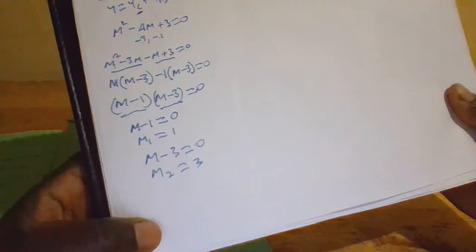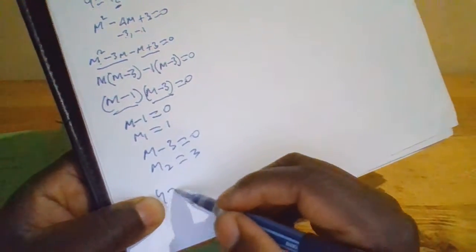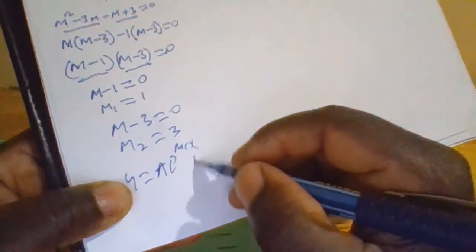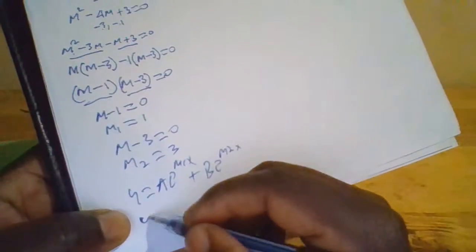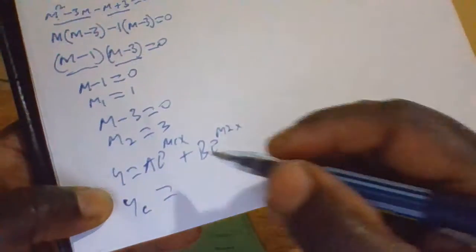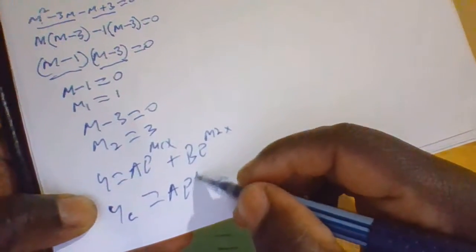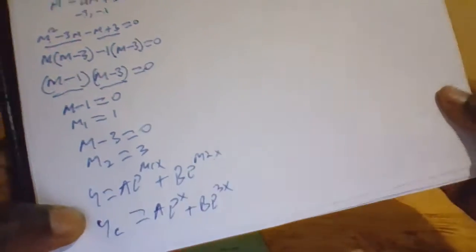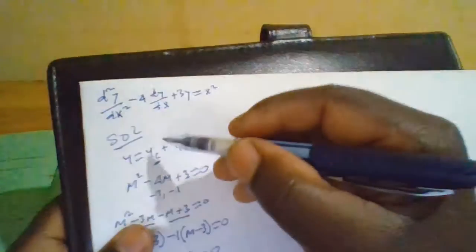For real and different roots, the complementary function is given by y equals A·e^(m₁x) plus B·e^(m₂x). Since m₁ is 1 and m₂ is 3, the complementary function is y = Ae^x plus Be^(3x).